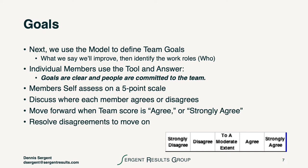The next stage is to talk about the goals — it's what we say will improve — and then identify the work roles of who will do the work to reach that goal. It's not just one person; sometimes it'll be all of the team. Individual members use the tool and answer this clear question with a score: the goals are clear and people are committed to the team. They self-assess on the same five-point scale, and after everybody's made their assessment, the team discusses where they agree or disagree. The team moves forward when the team's score is agree or strongly agree, and they resolve disagreements to move on. If any member of the team does not agree or strongly agree, then we obviously have a gap we had to address.